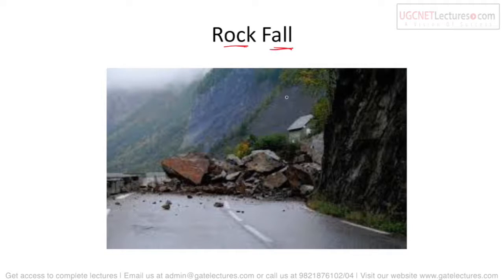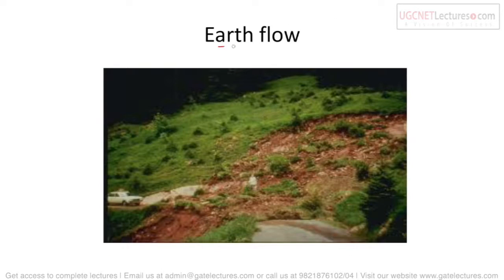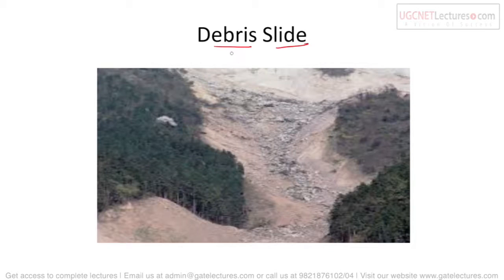Rock slide is where rocks slip, but rock fall is where rocks break off and completely fall down onto roads or land below. Then we have earth flow — where the earth or soil flows, especially during the rainy season. We also have debris slide — debris is rubble, a combination of soil and small stones that slides down; that is called debris slide.